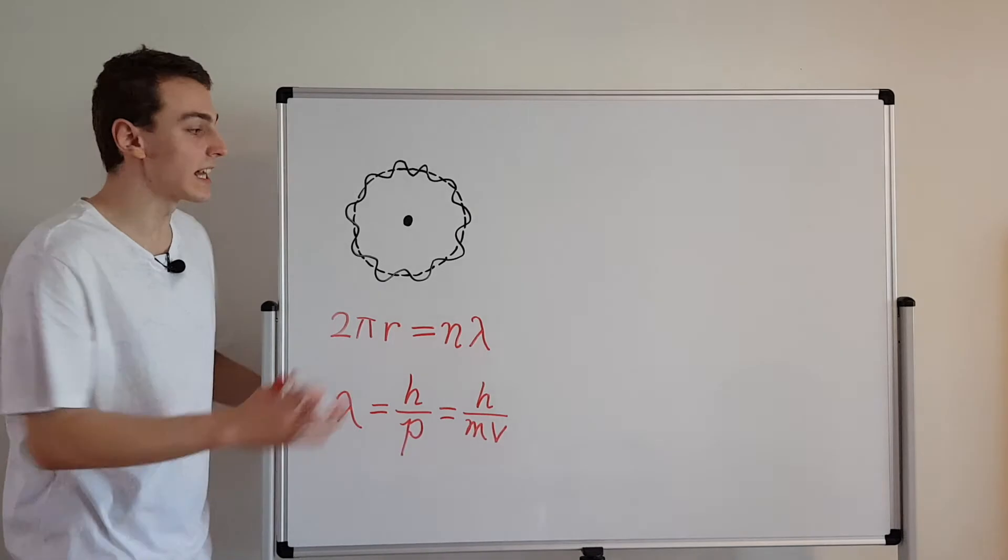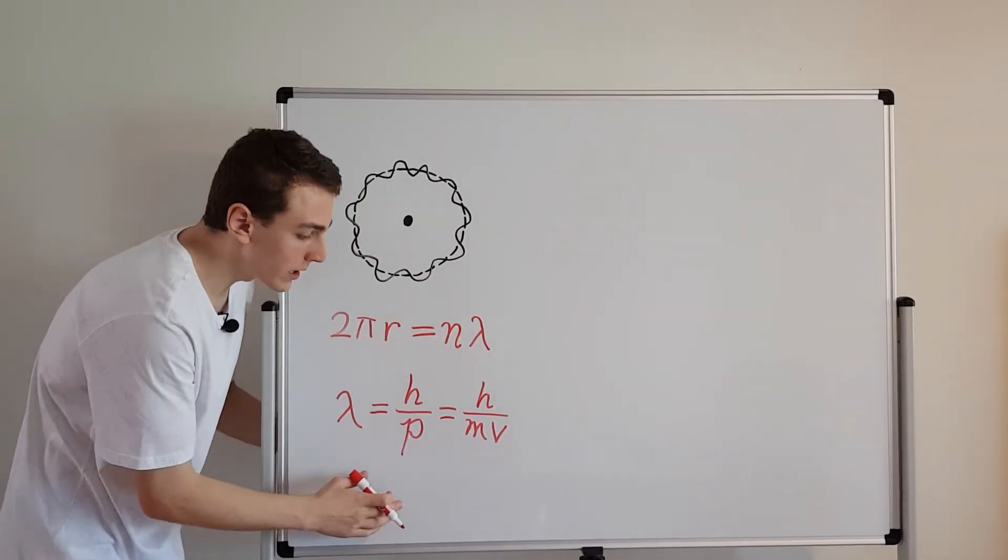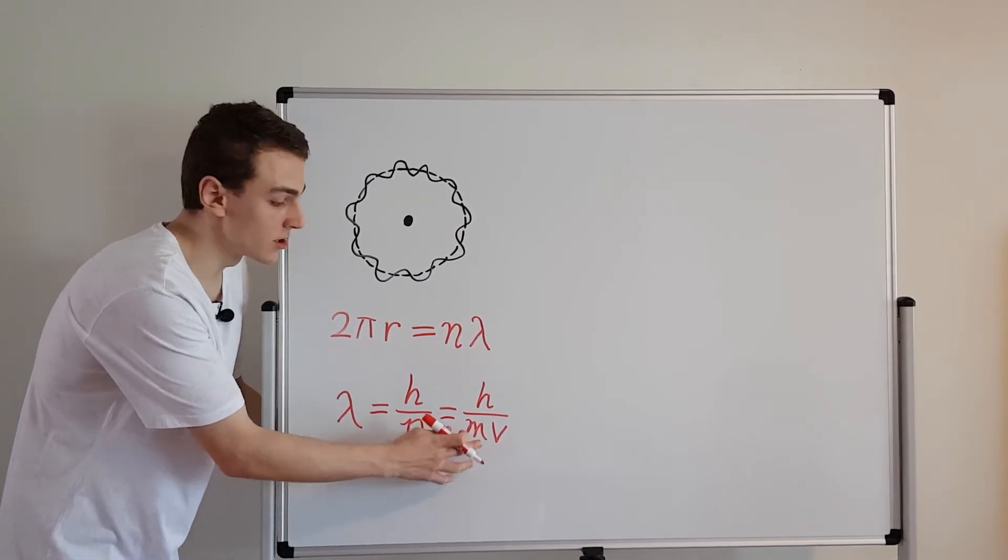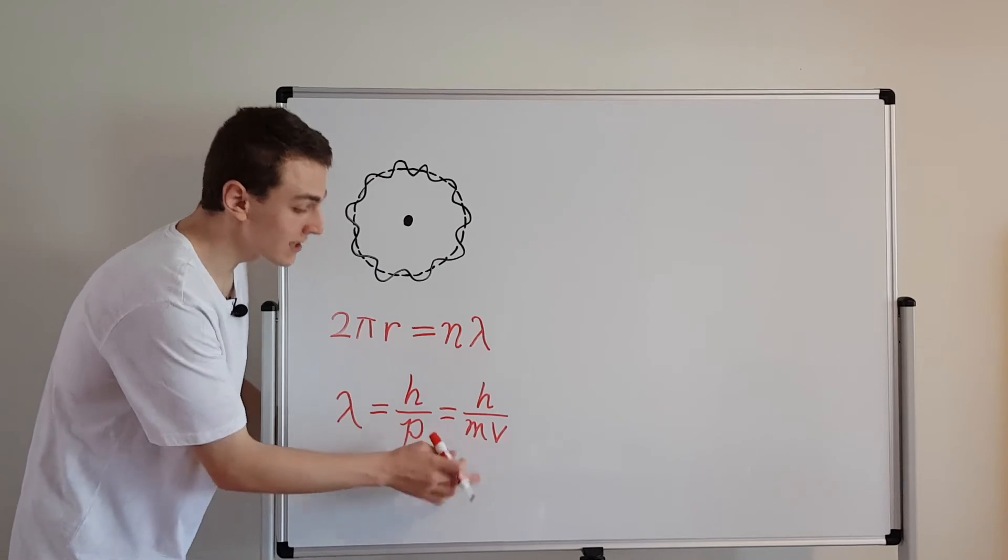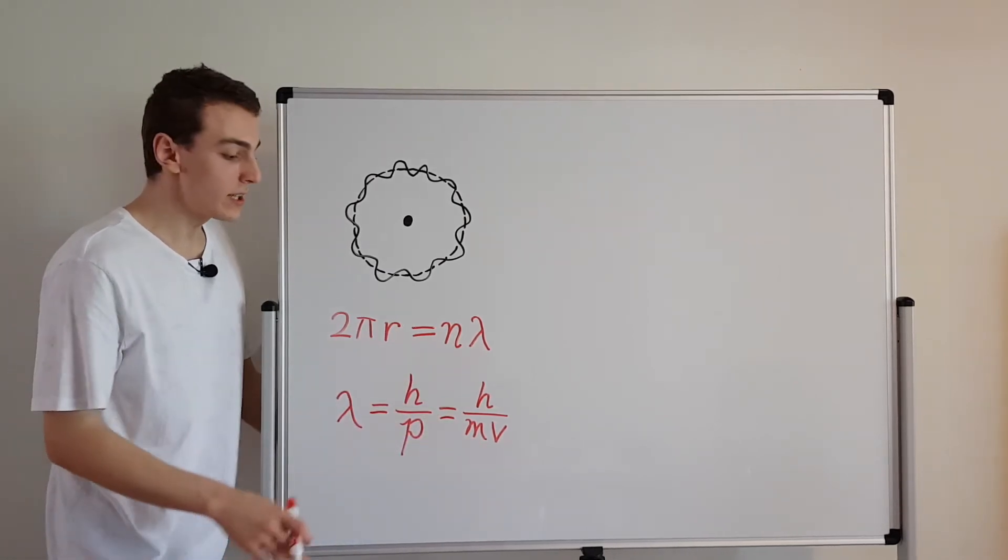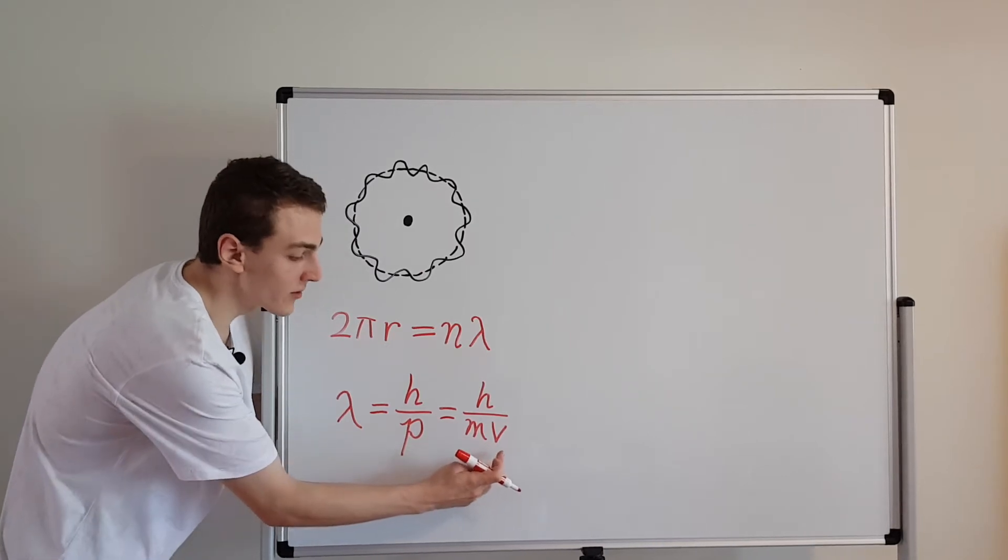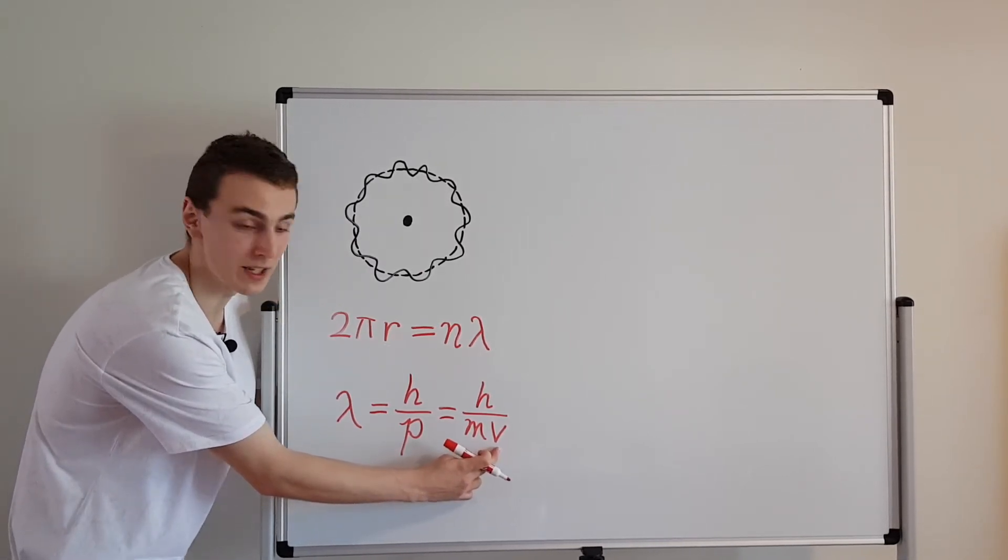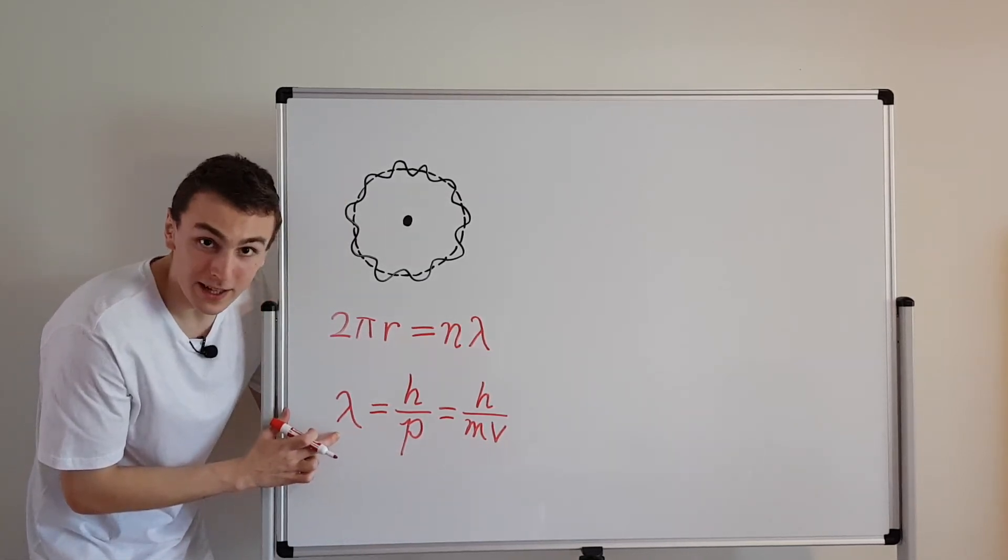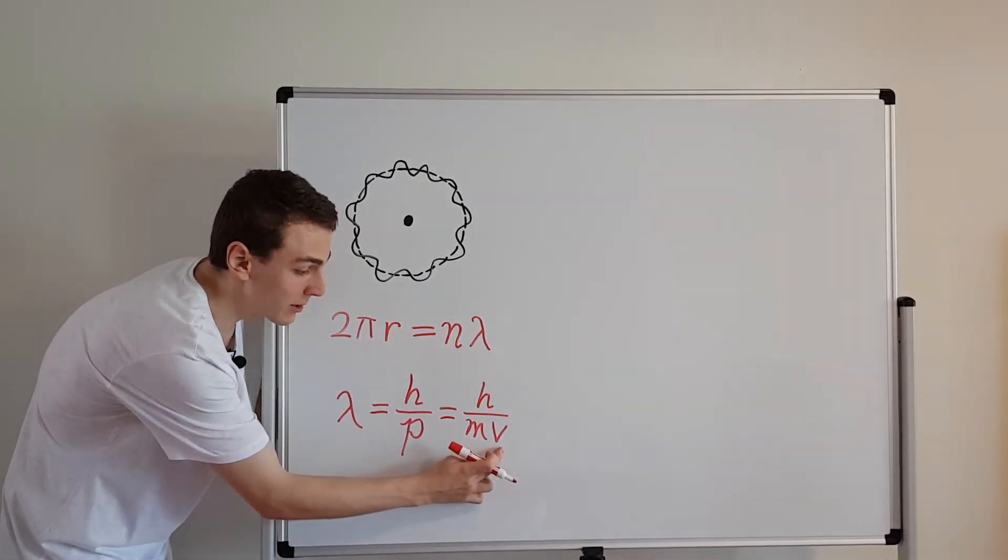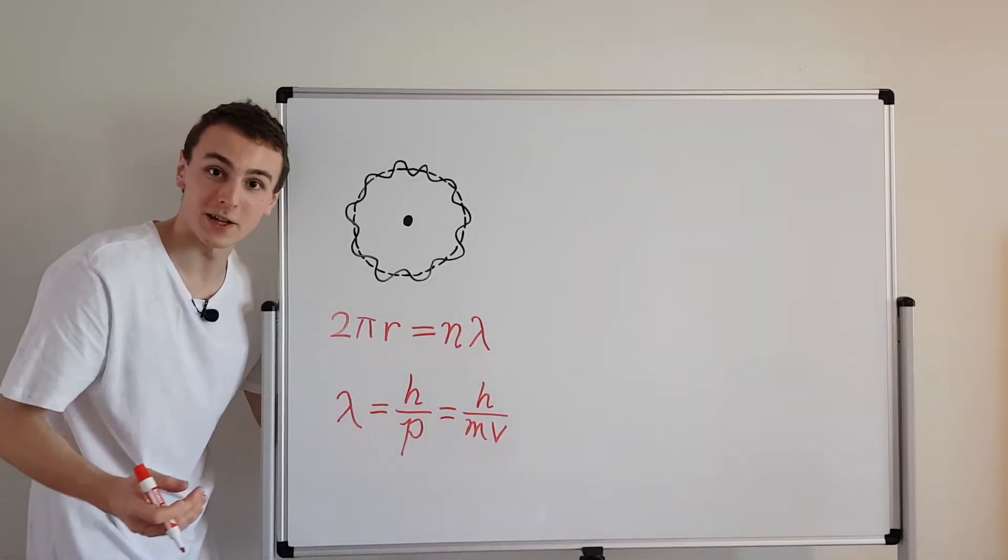Because we're considering just electrons whizzing around the nucleus, we don't have to worry about the mass, because the mass is a constant. So Planck's constant, it's in the name, it's going to be constant. And the mass, those guys are all constant. The only thing that's going to be changing is the velocity. So that means that if the velocity is larger, so a faster moving electron is going to have a smaller wavelength. Because the bigger value down here is going to have a smaller value over here.